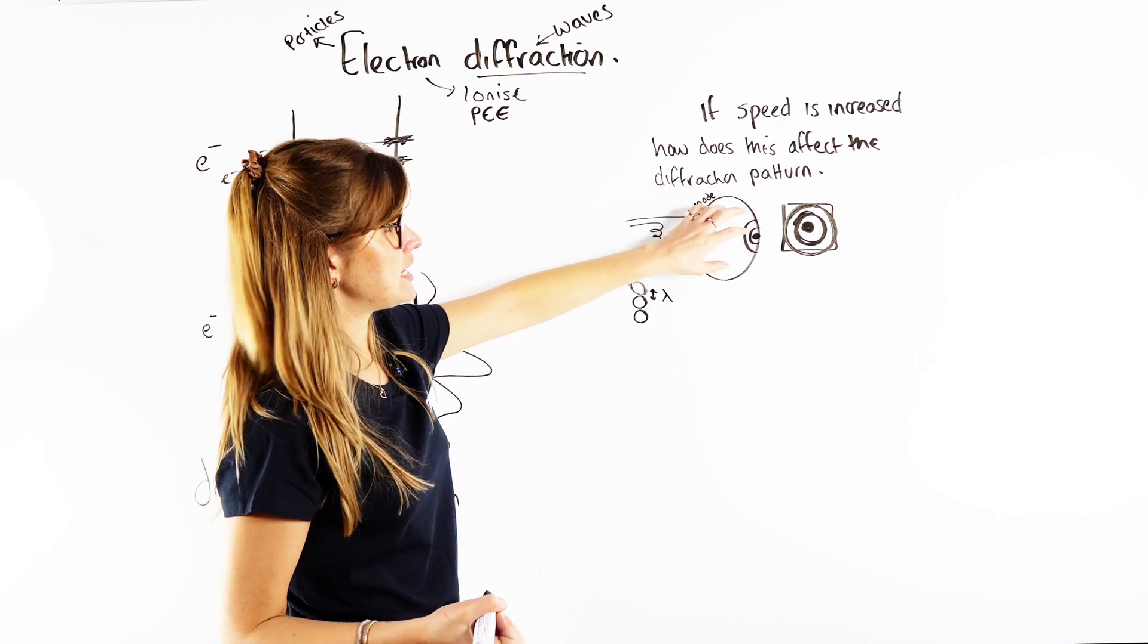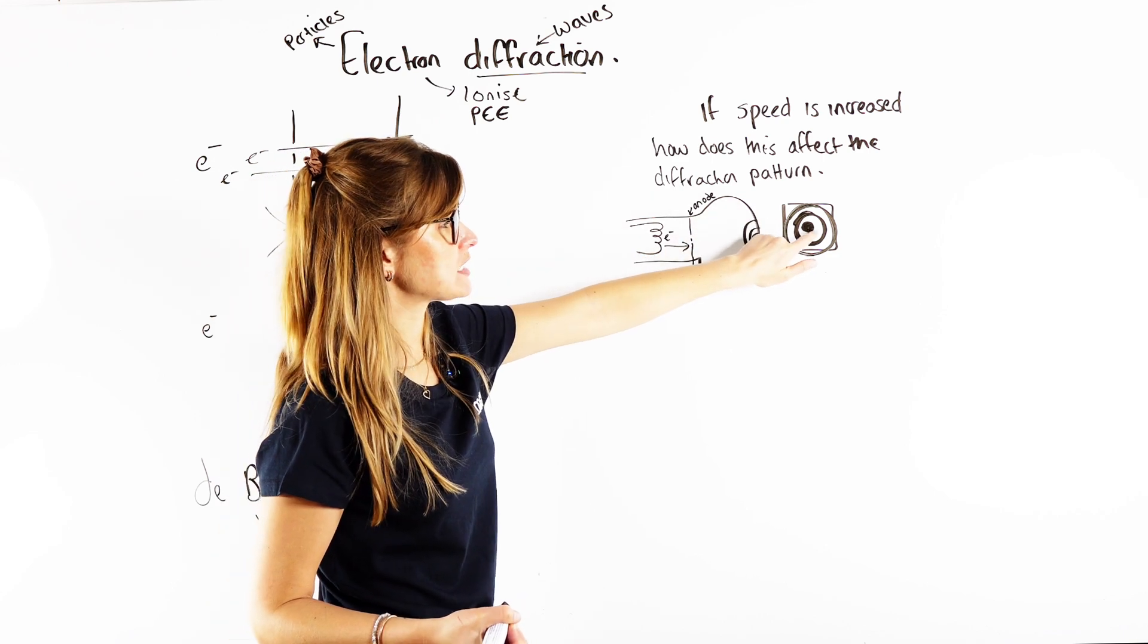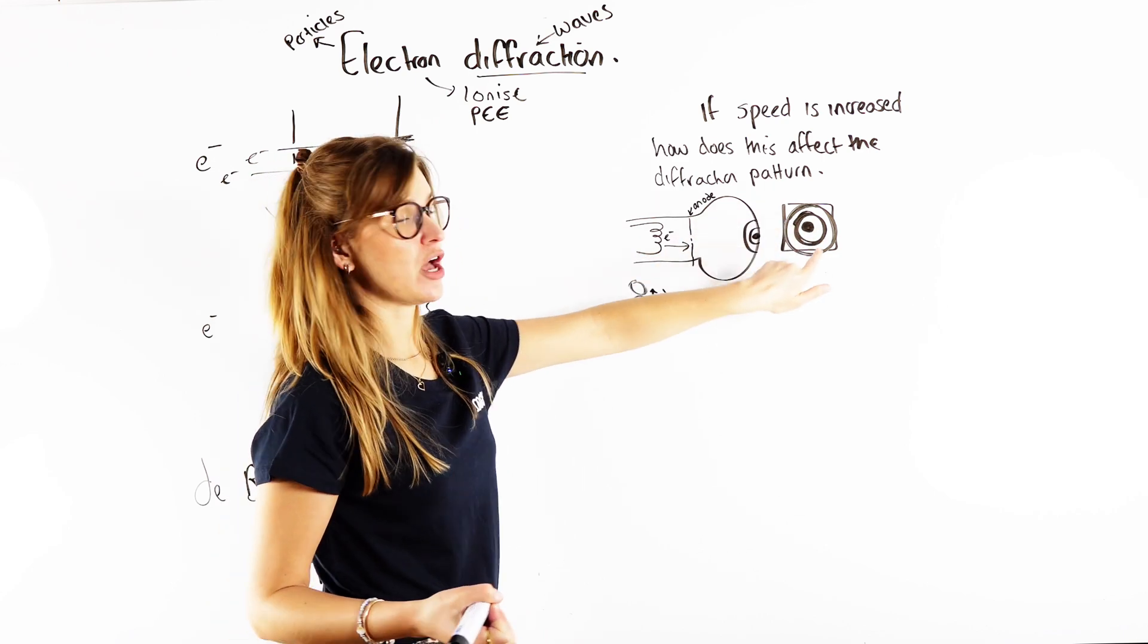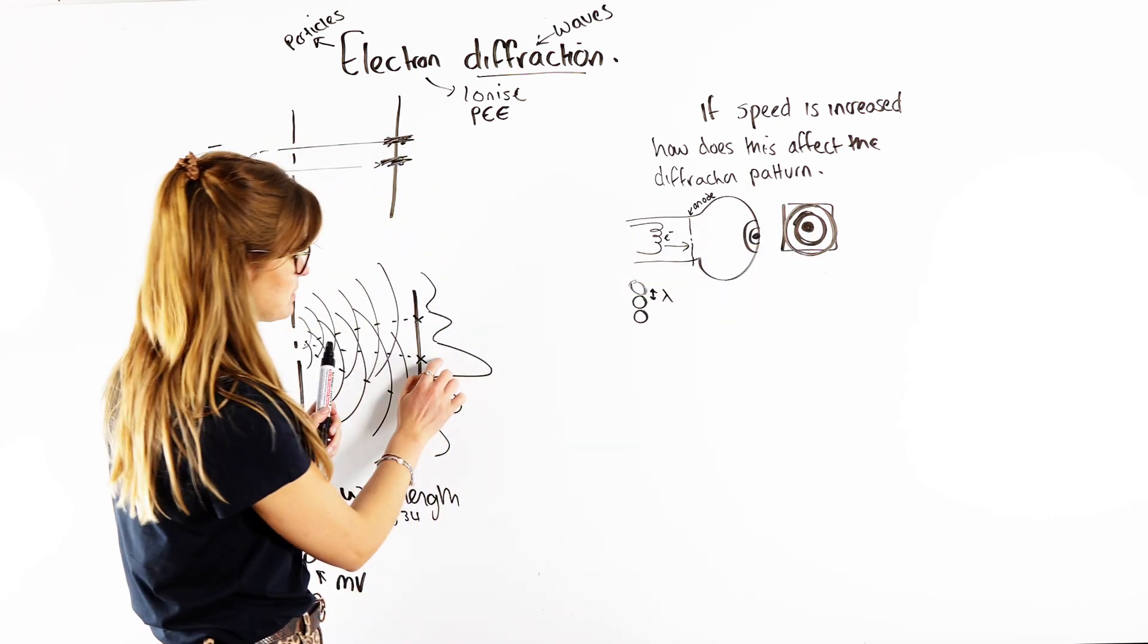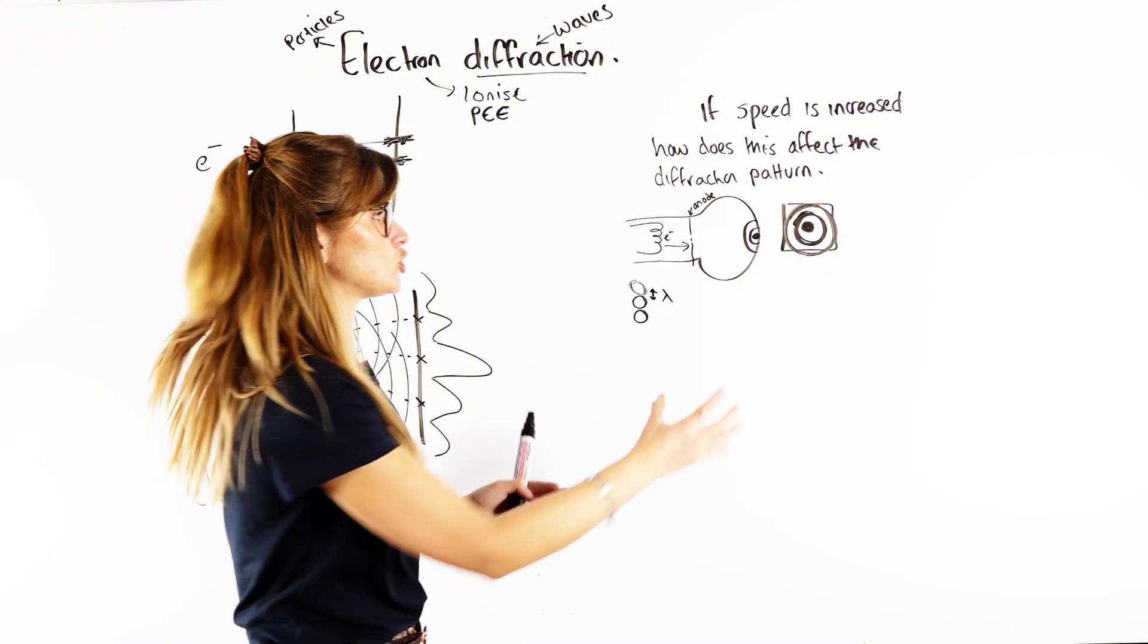And what we can see then on the screen, maybe it's like a fluorescent screen, is we can see those rings, that interference pattern of our central maximum, and then our maxima on the outer bit. So basically it's the exact same as this, but instead of being 2D, we just made it a 3D shape, and that's why we see those circles.